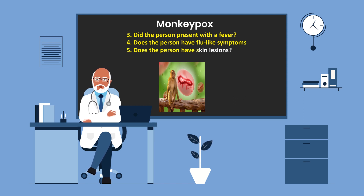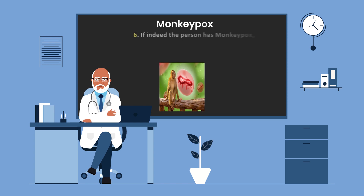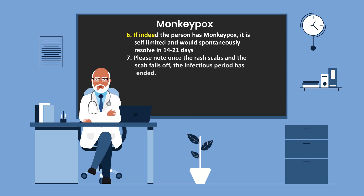Number five, does the person have skin lesions? Number six, if the person indeed has monkeypox, it is self-limited and would spontaneously resolve in 14 to 21 days. Please note that once the rash scabs and the scab falls off, the infectious period has ended.